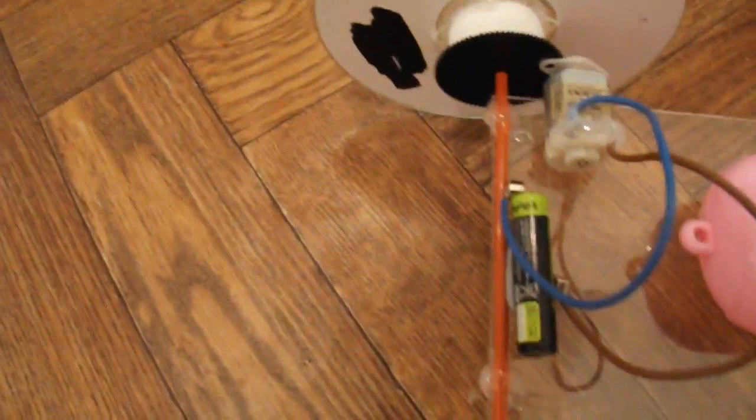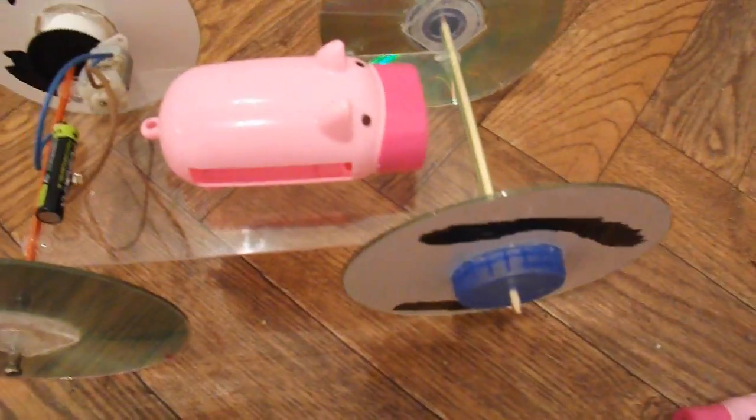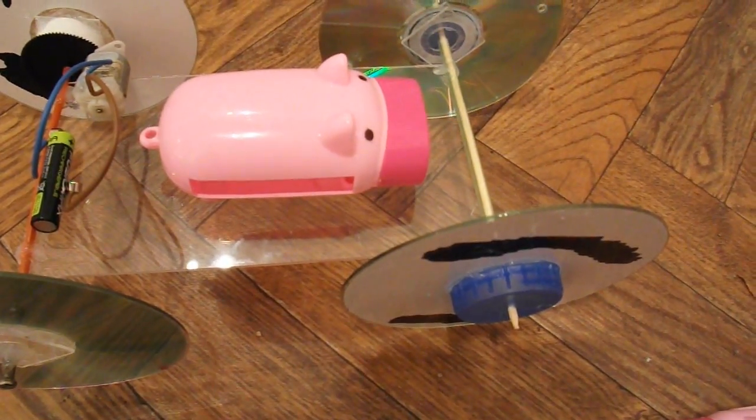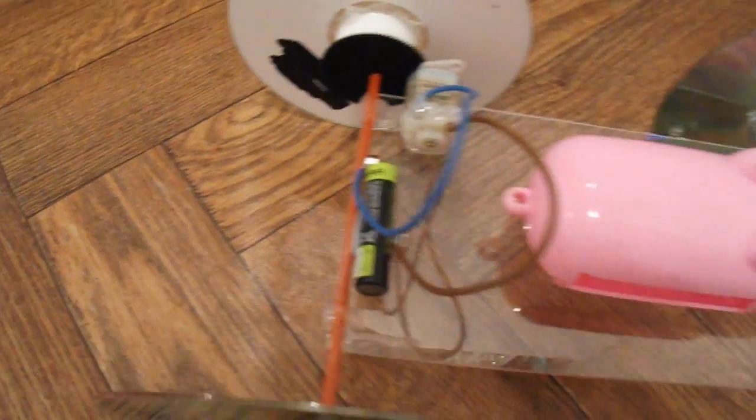CDs for wheels. Back axle, in this case, was actually an old bicycle spoke. The front axle is a barbecue skewer, drinking straw to hold it in place.